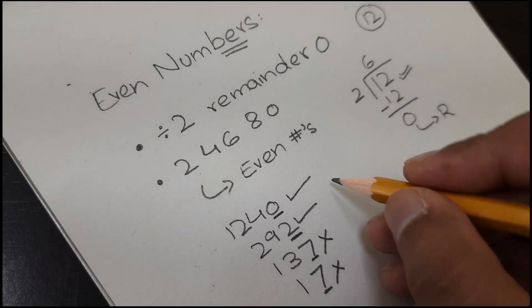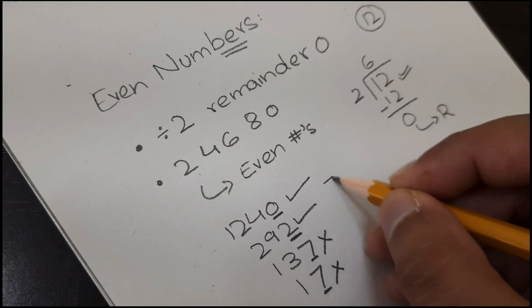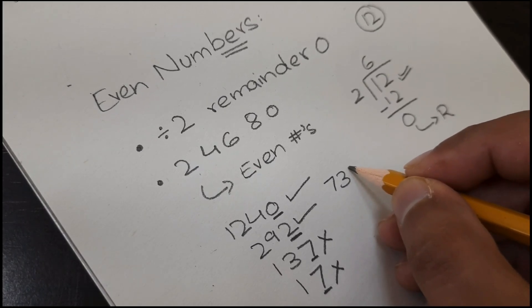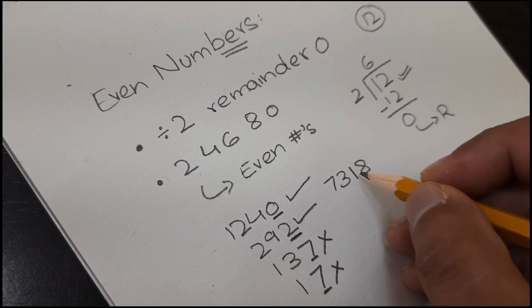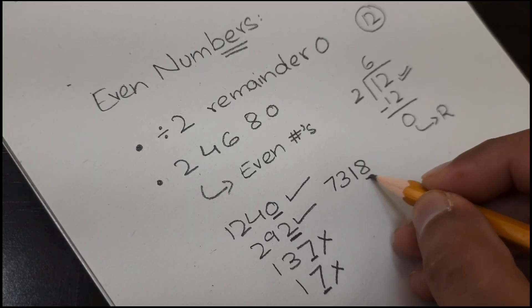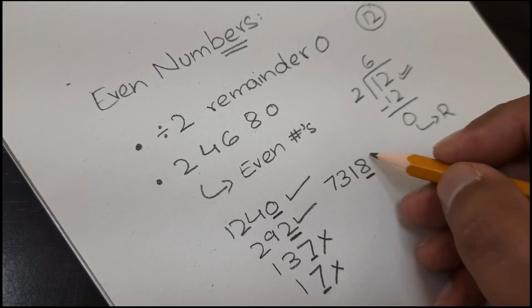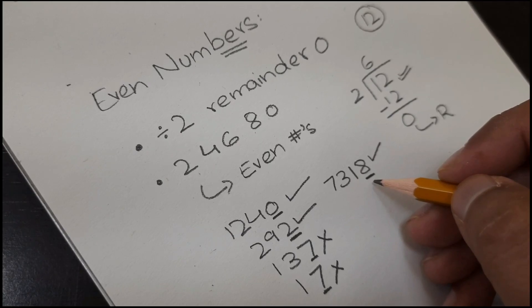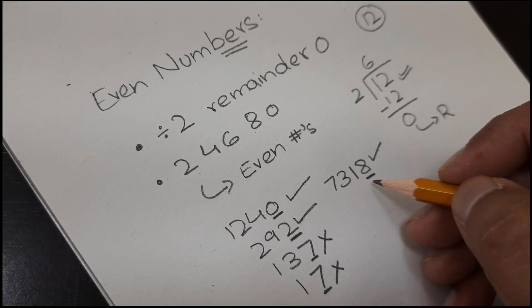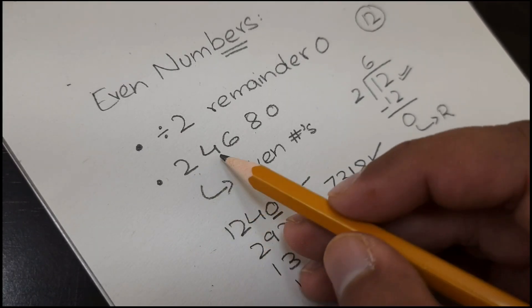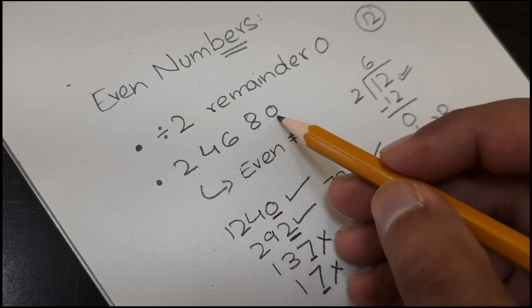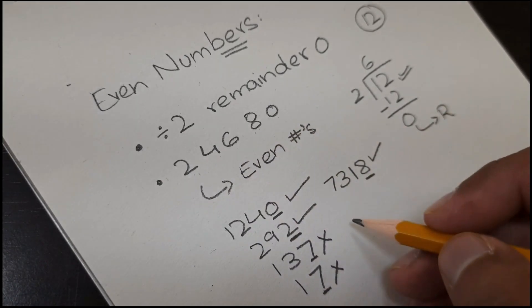Let's have another example. The number is 7318. In this number, the last digit is 8, which is even. You just have to check the last digit of the number, and if it is 2, 4, 6, 8, or 0, then it's an even number.